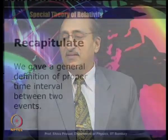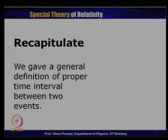Let us recapitulate what we did in our last lecture. We had given a general definition of proper time interval between two events. When we first introduced the concept of proper time interval, it was in the context of the time dilation formula. At that time, we said that if two events occur in a given frame at the same position, then the time interval between these two events as measured in that frame will be called the proper time interval.